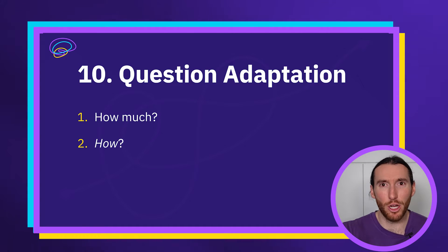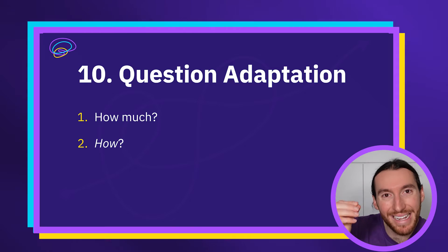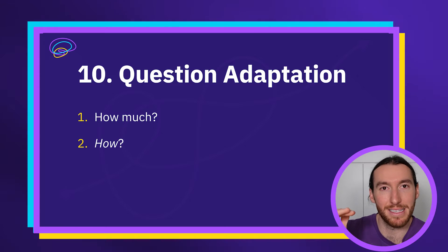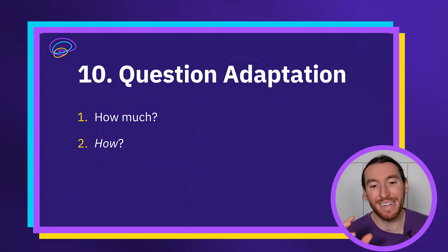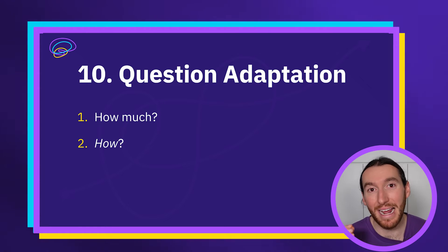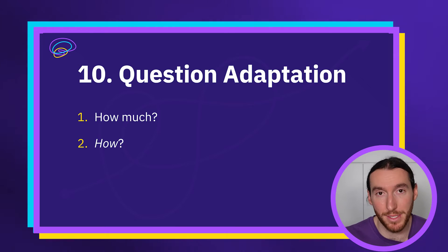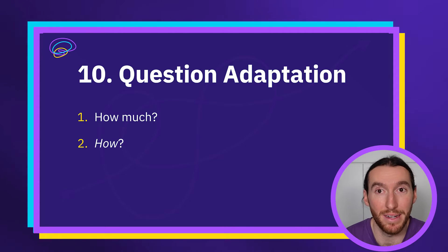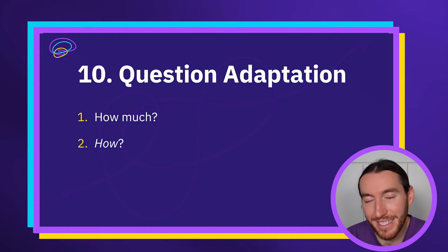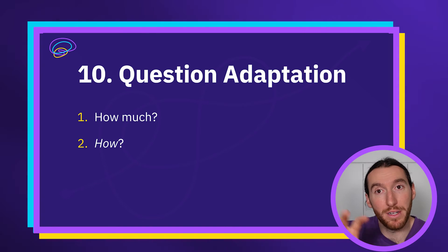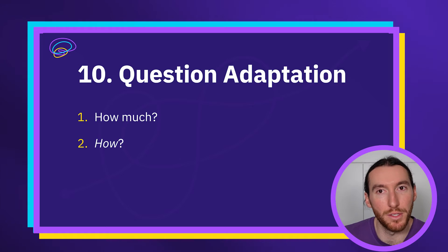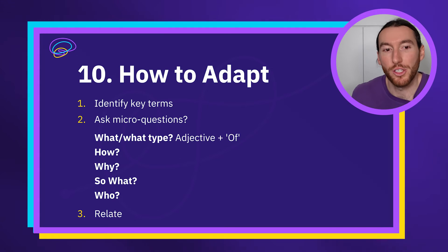If you use the key terms nine times in your introduction in a meaningful way and it's well structured, how could that not be band six? You want the marker to be thinking band six once they finish reading your introduction. If you write a sentence in the introduction that doesn't directly reference an actual key term — not a synonym, the actual key term — the marker will start thinking you're not answering the question. Topic sentences and link sentences are also key; evidence sentences require lighter adaptation, maybe just substituting a word.